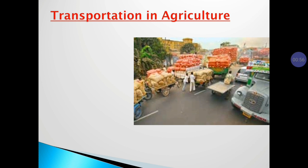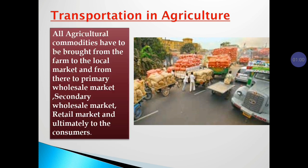Transport is also heavily important in agriculture. Most of the goods are not consumed where they are produced. All agriculture commodities have to be brought from the farm to the local market, from there to the primary wholesale market, secondary wholesale market, retail market, and ultimately to consumers. Transportation adds place utility to goods and its importance has increased over time with the concept of urbanization.